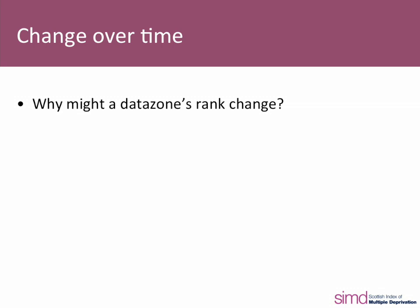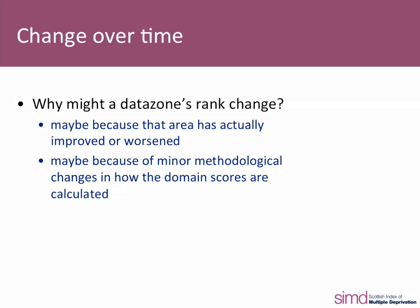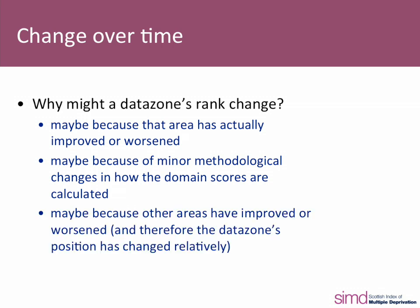The SIMD was first published in 2004, with updates in 2006, 2009, and 2012. Although it's possible to look at changes over time, it's important to bear in mind there are several reasons why a data zone's rank might change. It might be because the area has actually improved or worsened, but it might also be because other areas have improved or worsened more so, changing a data zone's position relatively. For example, if data zone A stays the same but data zone B improves, it could push data zone A down the rankings without any actual change in data zone A.